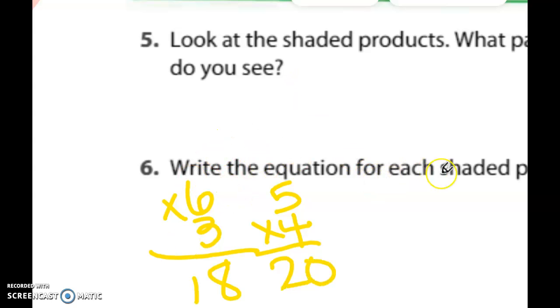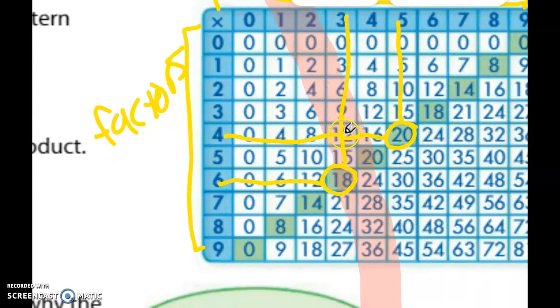So you need to write the equations for each shaded product, and you can use the same strategy, drawing a line up to the factors.